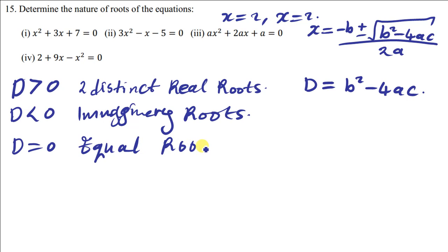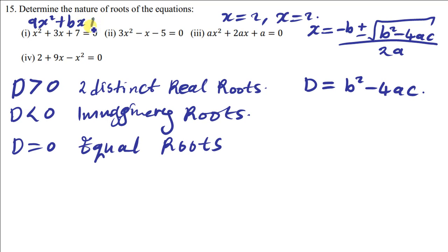The roots are simply the solutions you find after solving a quadratic equation. We're going to use this same concept to determine the nature of roots of the given quadratic equation. We'll use D equals b squared minus 4ac. From the general form of a quadratic equation, ax squared plus bx plus c, the coefficient of x squared is a, the coefficient of x is b, and the constant is c.